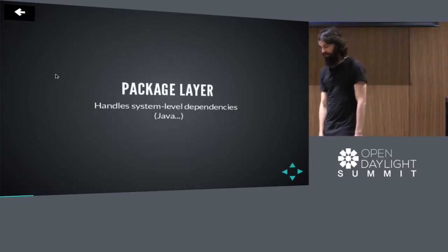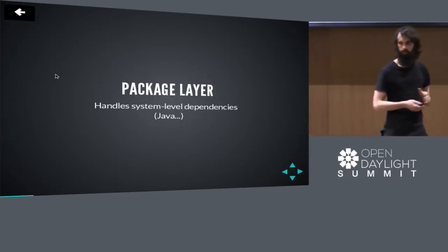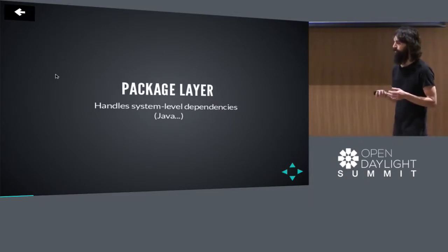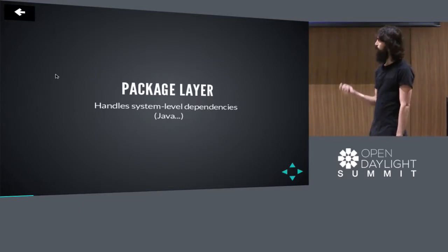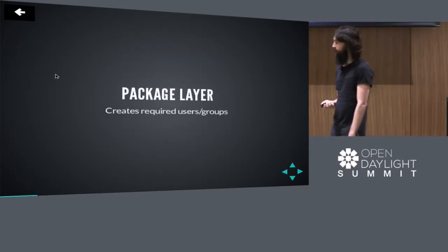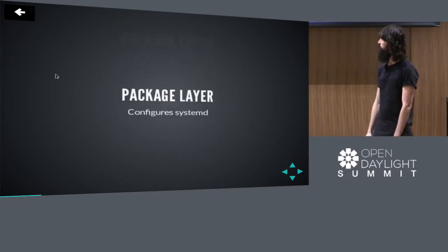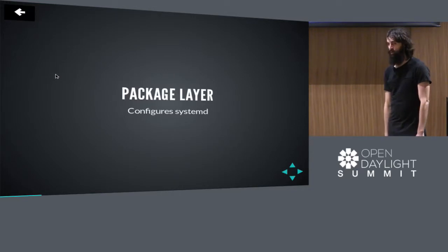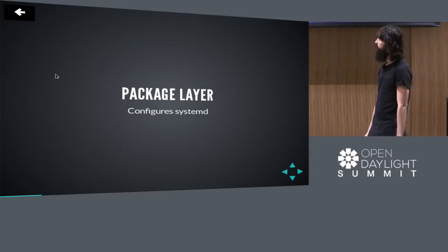So the package layer — what do I mean when I say that? The package layer does things like handle files, lay down the files in the filesystem in the right locations. It also handles system-level dependencies, which in OpenDaylight's case is Java. Once we have files, we can create the required users and groups, and once we have users, groups, and files, we can set permissions. It also manages OpenDaylight using systemd, so we can do systemctl start, stop, and restart OpenDaylight.